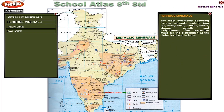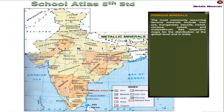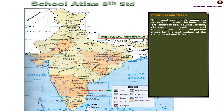Ferrous Minerals. The most commonly occurring ferrous minerals include iron ore, manganese, bauxite, nickel, chrome, cobalt and molybdenum. See respective maps for the distribution at the global level and in India.